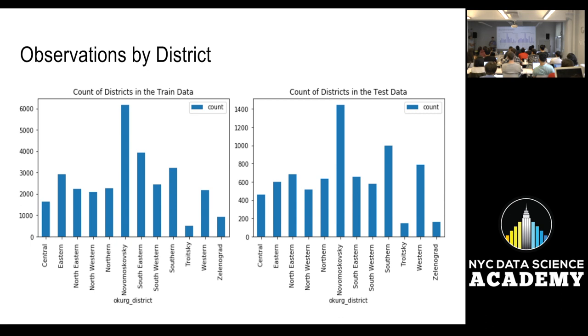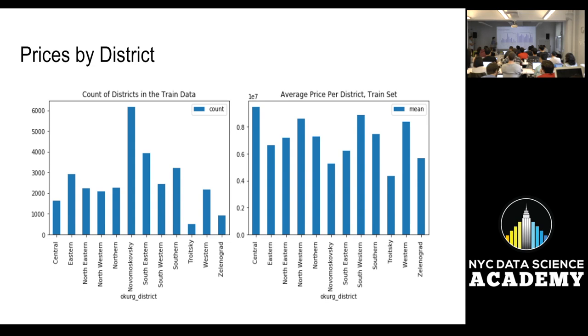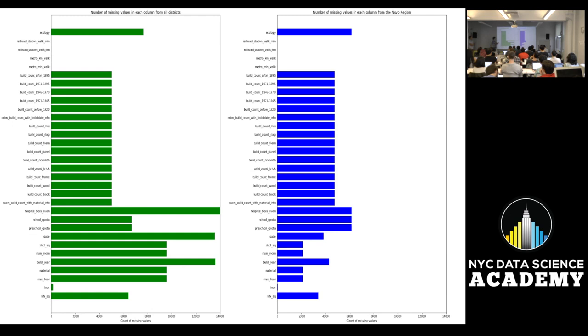So, this is the observations by district. You see that we have a lot. And I'm going to call it Novo. And both in the train and the test, Novo sticks out. And it's funny. Novo is actually one of the lower priced districts. Novo and Charyotsky. Those are kind of outside of Maine and Moscow. And they bring down if you just look at the median prices, those kind of weigh down, as you can tell over there.